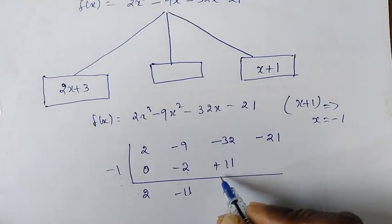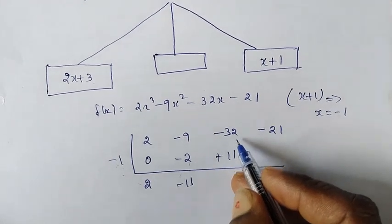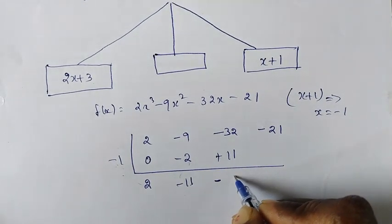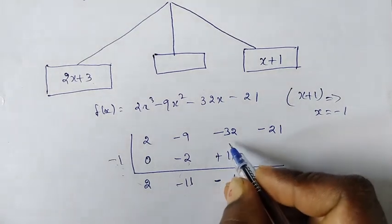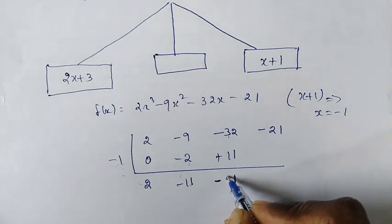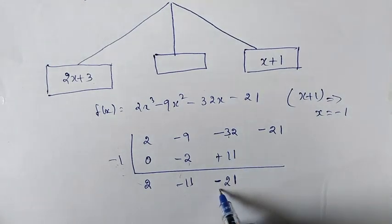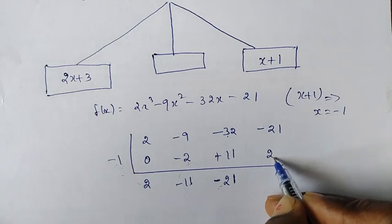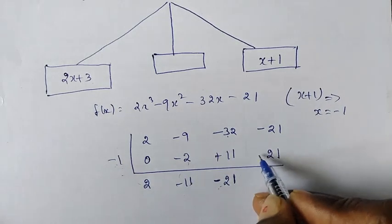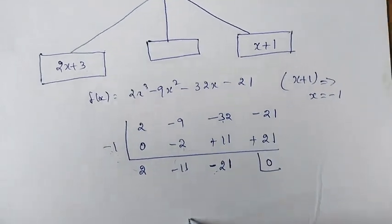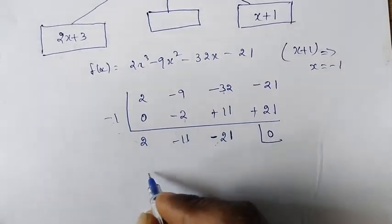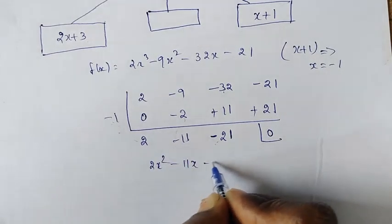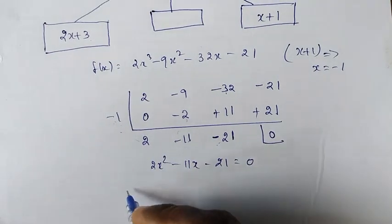11 times 1 is 11 — multiplication. Subtraction takes the sign of the greater number. We get 1, then 3 is 1, giving 2. Multiplication: 21 times 1 is 21; minus into minus is plus, giving 0. Therefore, 2x squared minus 11x minus 21 equals 0.